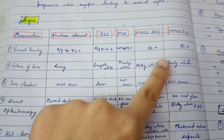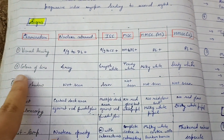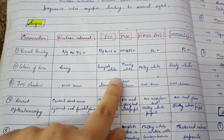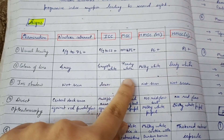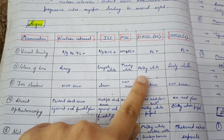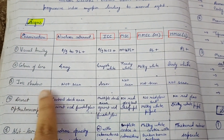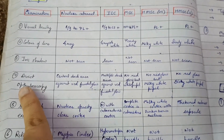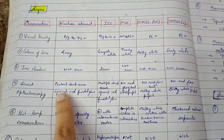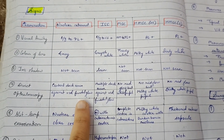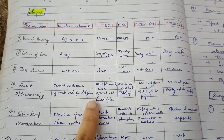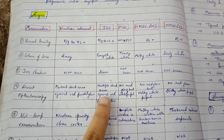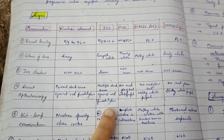Color of the lens: in nuclear and immature it is gray; in mature it is pearly white; in hypermature morgagnian it is milky white; in hypermature sclerotic it is dirty white. Iris shadow is only seen in immature senile cataract. In direct ophthalmoscopy, red fundal glow is visible in nuclear and immature stages. A central dark area is seen in nuclear cataract, and multiple dark areas against the red fundal glow are seen in immature cataract.